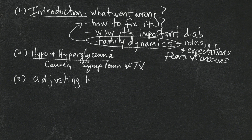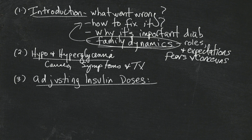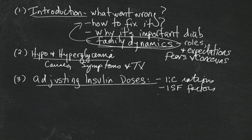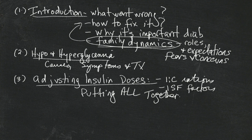Adjusting insulin doses has a few stages to it because there's a lot involved. We'll be talking about calculating insulin-to-carb ratios, calculating insulin sensitivity factors, and then putting it all together. That'll take some time, but we're going to do it. And you'll see that all of this stuff is way easier than you think.